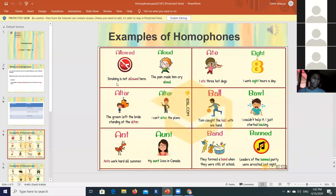'Allowed' means like allowing things to do. 'Aloud' means like doing a high sound. 'Eight' - I ate something like food, like hamburger - is spelled A-T-E, but 'eight' as the number is E-I-G-H-T. 'Altar' is spelled A-L-T-A-R, but the other one is A-L-T-E-R.